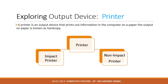Our next output device is the printer. A printer is an output device that prints information from the computer onto paper. This output on paper is known as hardcopy. Printers are classified into two different types based on speed and print quality: the two main types are impact and non-impact printers.